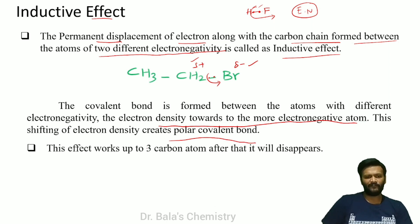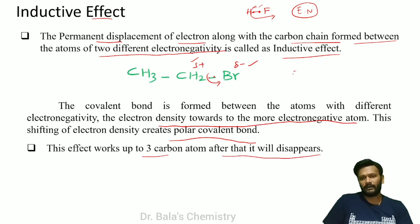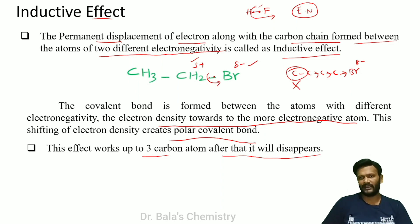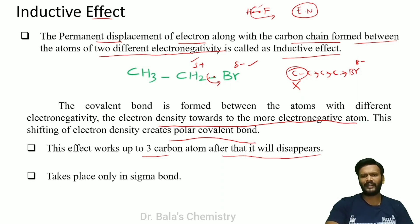This effect works up to 3 carbon atoms — after that, it will disappear. If you look at the chain: 1, 2, 3 carbon atoms — then the effect will disappear. It becomes very small with distance. Usually, the inductive effect takes place only in a sigma bond.